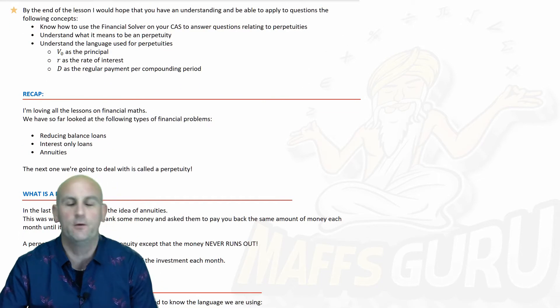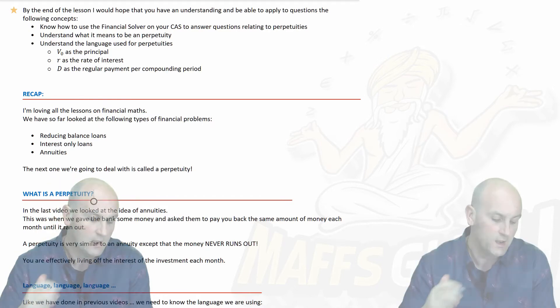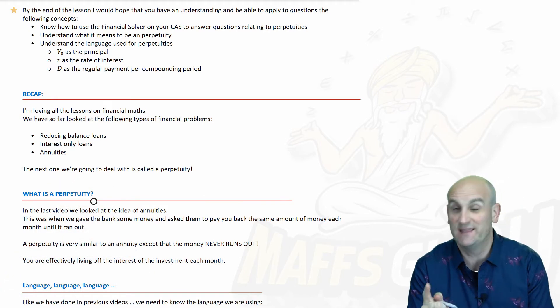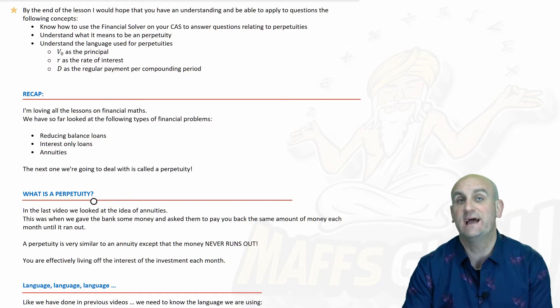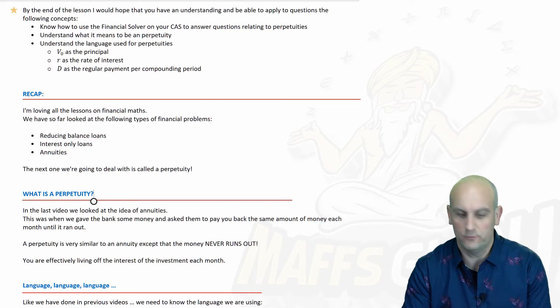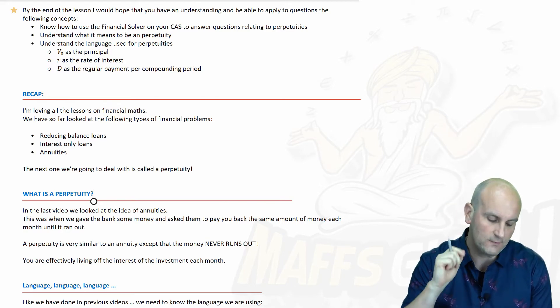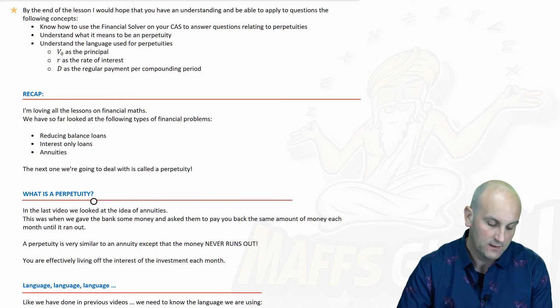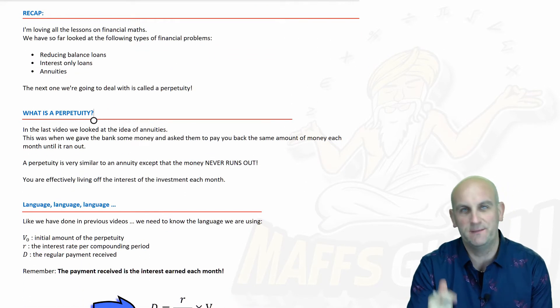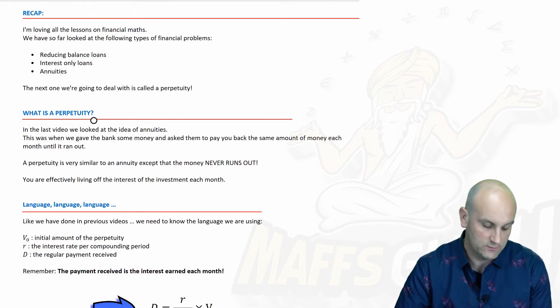What I'm gonna hope to do for this lesson: basically know what a perpetuity is, understand the language of perpetuities, use our CAS to help solve. This is a CAS enabled course, which is great because our CAS has financial calculator stuff that'll do all this hard work. Know what V0 is, the rate of interest, and a regular payment. This regular payment is effectively the money we're going to take out. We've built on the idea of reducing balance loans and interest only loans.